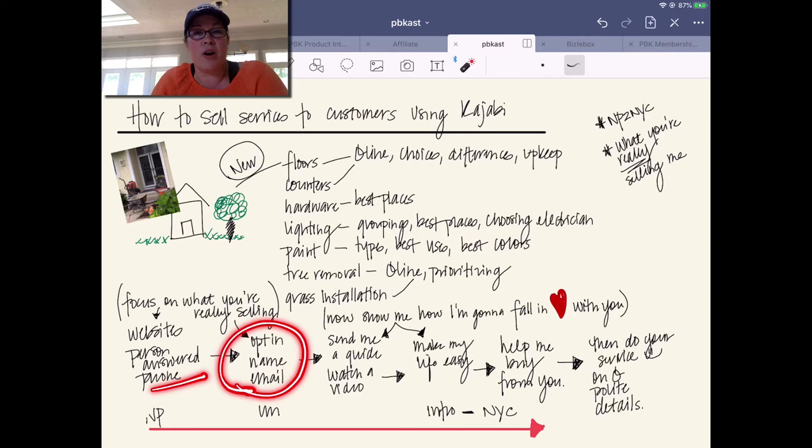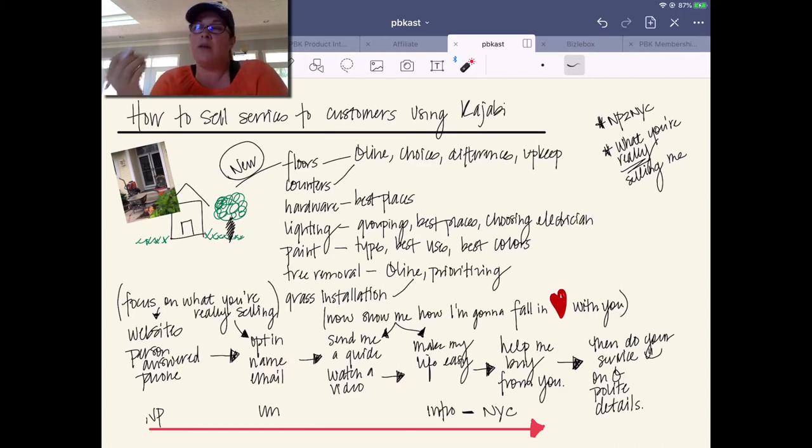That would have been so easy to have gone to their website, opted in, given them our name and email. And then they could have sent us automatically, because service-based businesses, you have to scale this. They could have easily sent us a one-page guide. Here's the top 10 things you need to know about putting in a yard. Bullet point number five could easily have been, if you are in the months of May, June, July. You know what? Hold on. Don't put - this is what you can save. Your grass will come in better if you install this grass in August. Here's the differences between installing in this month and installing in this month. Would have been a piece of cake and would have made me, as a customer, call them less.